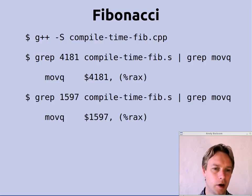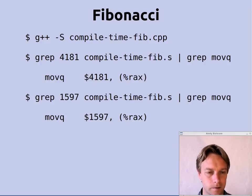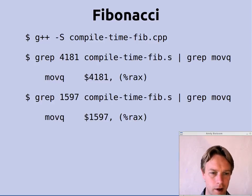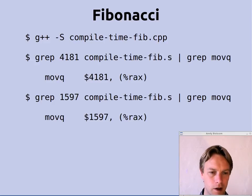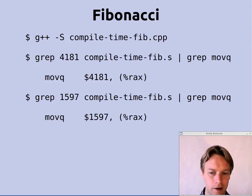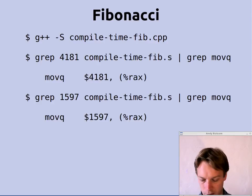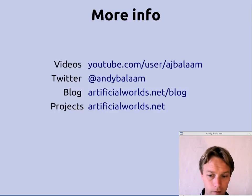Let's compile this. All that code is in a file called compile-time-fib.cpp. We compile it into assembly language and grep through it for some numbers — 4181 and 1597, which I happen to know are Fibonacci numbers. All I'm trying to prove is that when you compile this program, the Fibonacci numbers are there in the assembly language. These things are not getting calculated at runtime — the only thing happening at runtime is they're getting inserted into the array of answers.